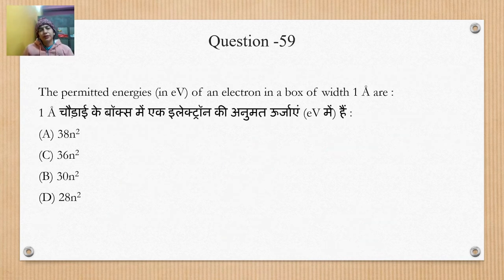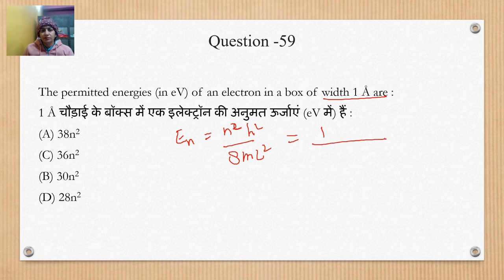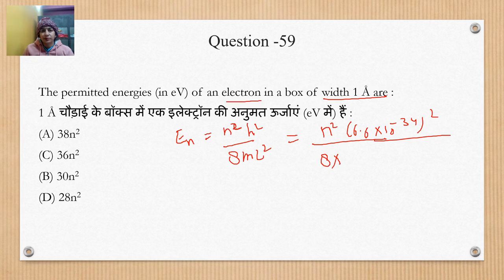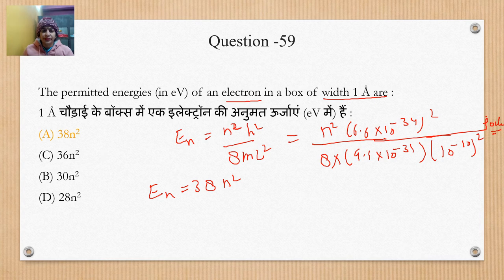Question 59: The ground state energy in eV of an electron in a box of one angstrom. For a particle in a box, energy E = n²h²/(8mL²). Setting n = 1, h = 6.6×10⁻³⁴ J·s, m = 9.1×10⁻³¹ kg (electron mass), L = 1 angstrom = 10⁻¹⁰ m. Substituting these values and converting from joules to eV gives the answer 38n² eV. So option A, 38 eV, is correct.